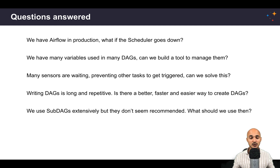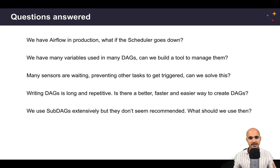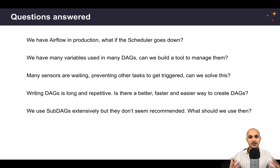Also, I know that many of you are using subDAGs extensively in your DAGs. The problem with subDAGs is that they are not really recommended because of deadlocks, and also because you can end up with weird behaviors if you are trying to execute multiple tasks at the same time using the local executor, for example, in your subDAGs. That's why it is recommended to use the sequential executor instead. Now in Airflow 2.0, there is a new concept of task groups in order to solve the problems with subDAGs.